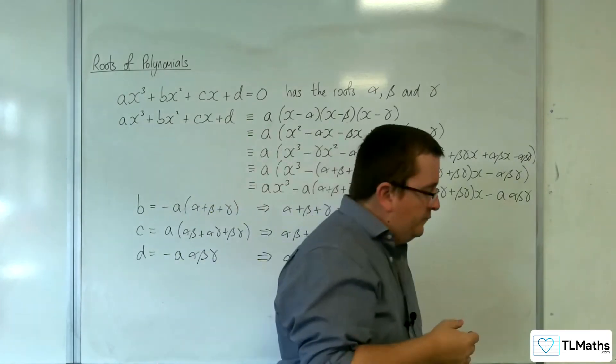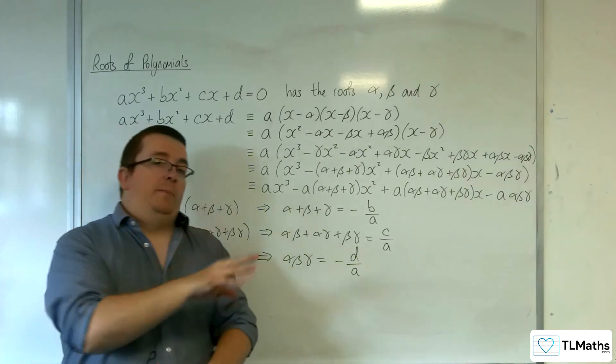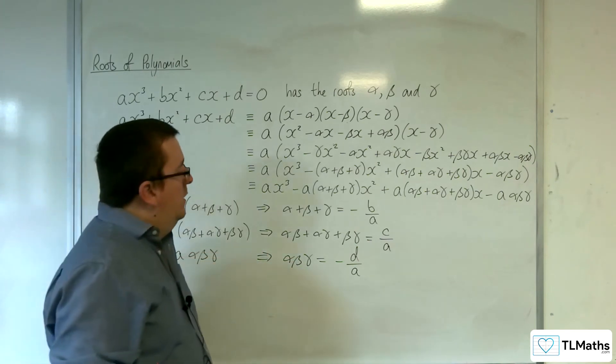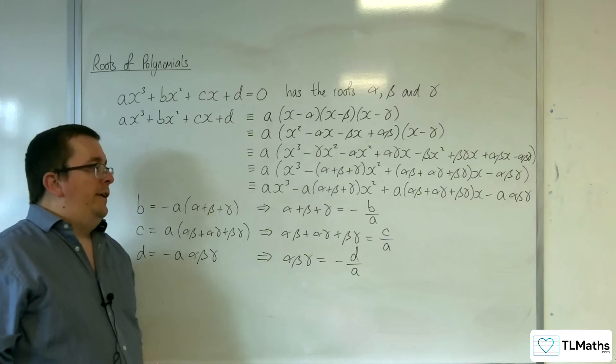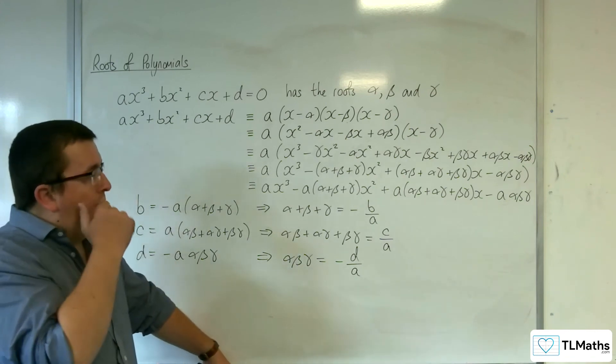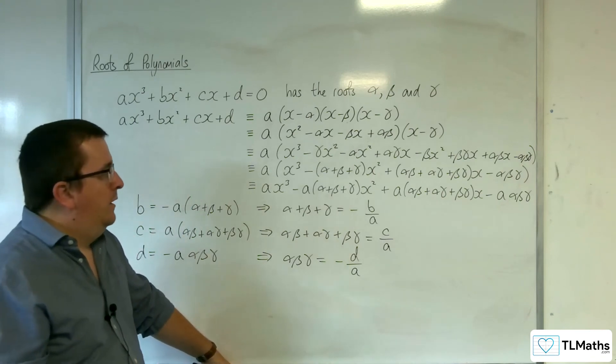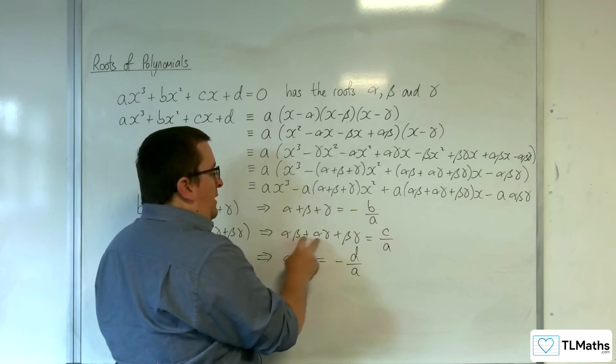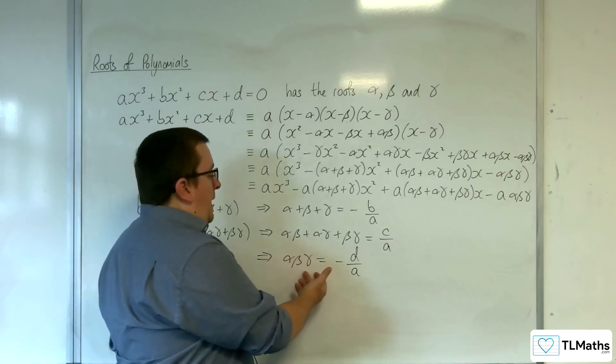What we often refer to these as - I've been using the terminology the sum of the roots and the product of the roots. This I often refer to, and you might see it written down as, the sum of the product pairs, or the sum of the pairs if you like. You've got α + β + γ, the sum of the roots. You've then got every way that you can multiply two of them together, added together. So the sum of the product pairs and αβγ.